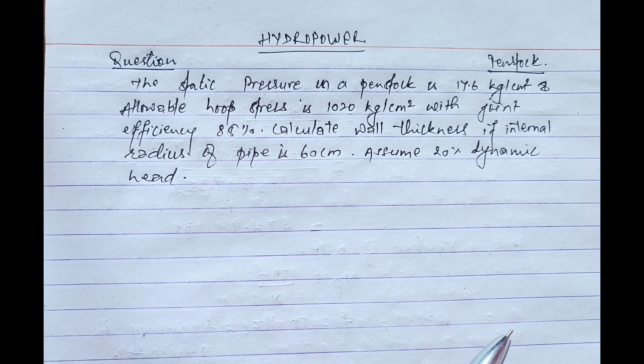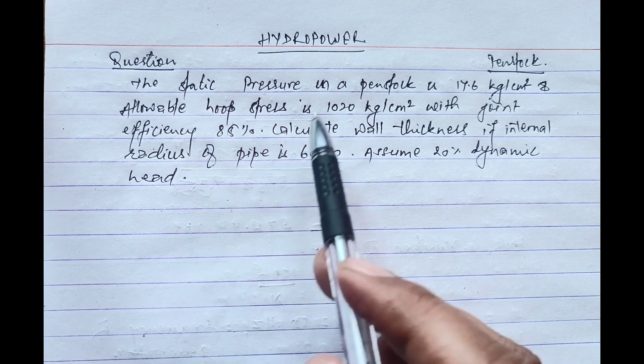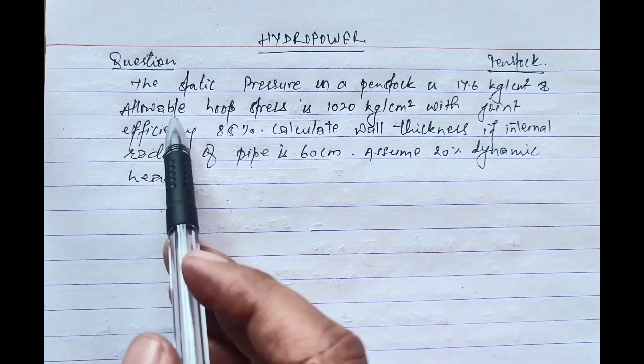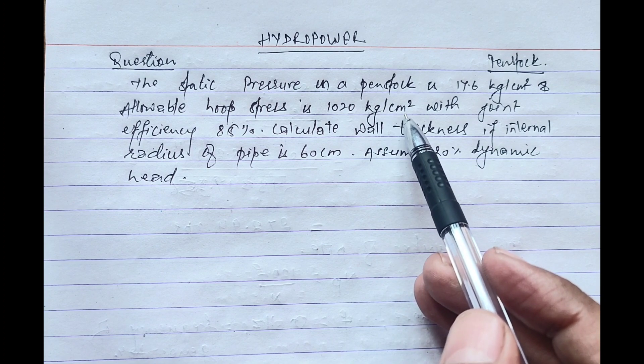Hello everyone, welcome to Hydropower. Today we'll solve one numerical problem related to penstock. The given question is: the static pressure in a penstock is 17.6 kg per cm² and allowable hoop stress is 1020 kg per cm².